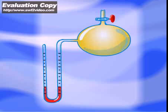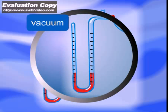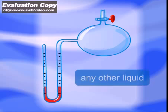If the container is evacuated completely, the columns of mercury will reach the same height in both arms.